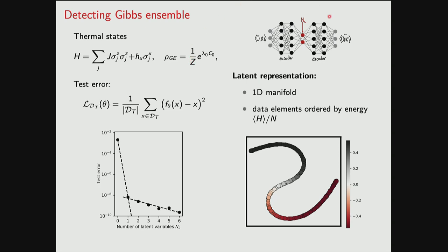It's also nice to look at where the high-dimensional input data maps in the latent space. One set of measurements at a given temperature maps to one point, another to a different one. When we look at this latent representation, we see it is one-dimensional, consistent with the autoencoder seeing thermal measurements at different temperatures. I color-coded these points according to the temperature or energy of the state, and we see it's ordered monotonically with respect to the corresponding energy.